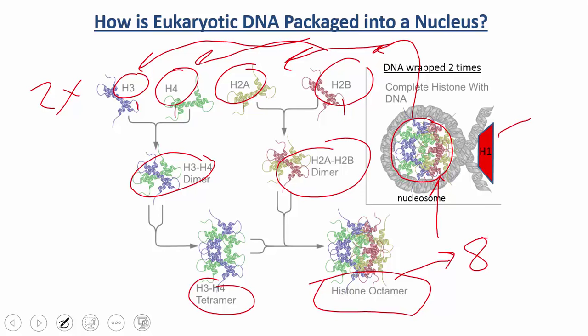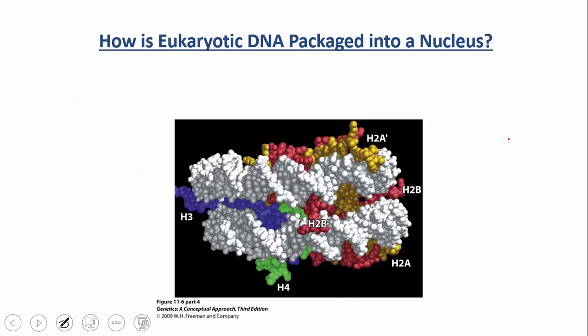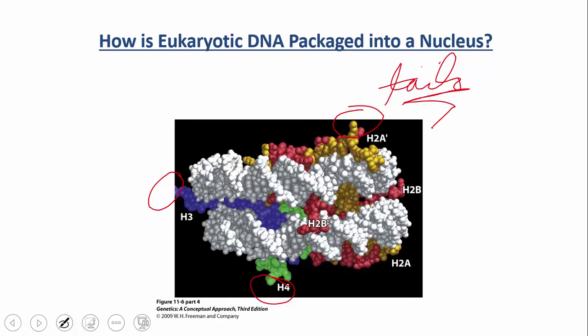When you add that extra protein — called the H1 protein — to the nucleosome core, you now have something called the chromatosome. You'll notice little extensions coming off of this nucleosome core, called tails. Think of them as arms reaching out and grabbing the DNA or loosening the DNA. Those tails are what allow expression or lack of expression of genes, and modification of those tails can influence whether they bind tightly or not.